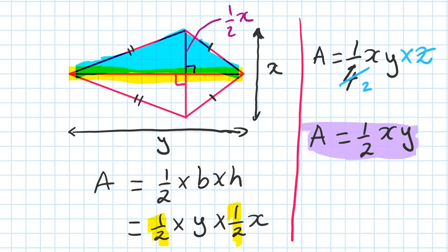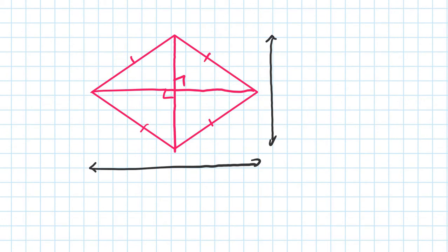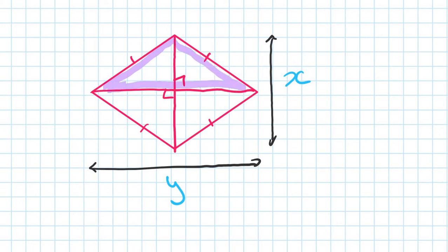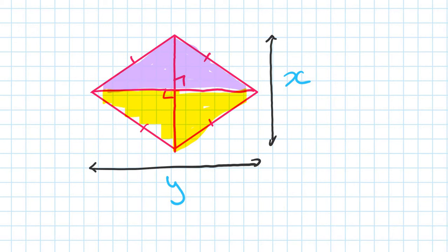Now this is a rhombus. Let's say the vertical diagonal is x and the horizontal length is y. If you look at this again, you see two triangles — the top triangle and the bottom triangle, which is exactly the same size.